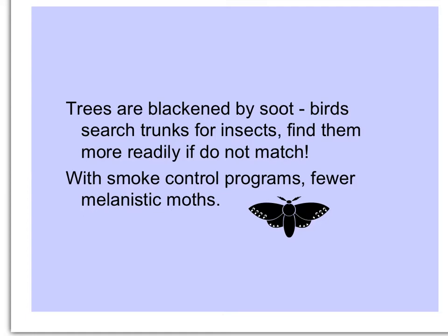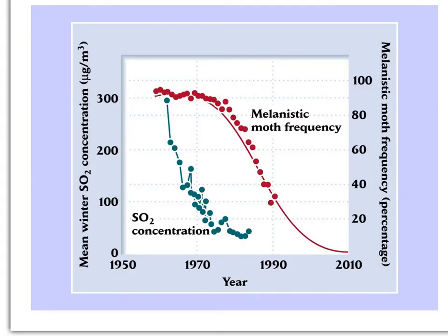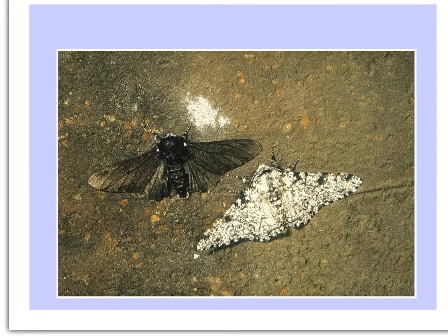As people became aware of smoke harming the natural environment and smoke control programs were put into effect, there were fewer melanistic moths. In this figure, the left y-axis shows the mean winter sulfur dioxide concentration — an indication of pollution — which was reduced over the years, and the frequency of the melanistic moths also declined, shown on the right-hand y-axis. Where it's black, the black moth is camouflaged; on a light trunk, the white moth would be hard to see.